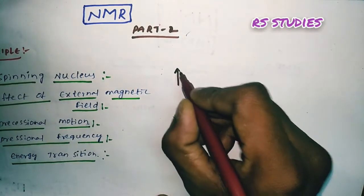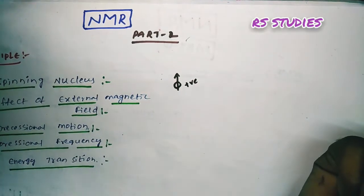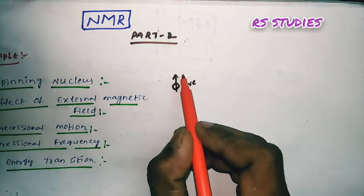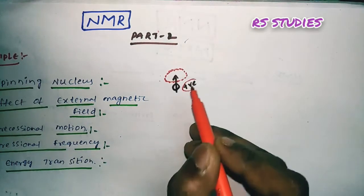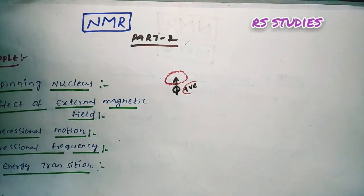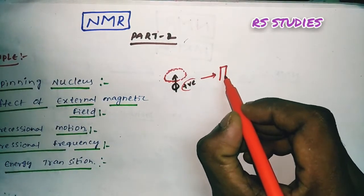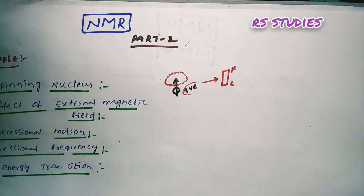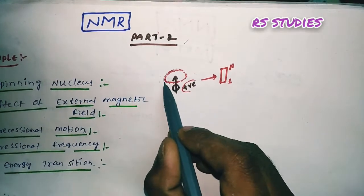We use a proton. The proton has spinning behavior and spinning properties. Protons are magnetic — they have a north and south pole. Since the proton has a positive charge, it has a spinning property and acts like a magnet due to its spinning nature.